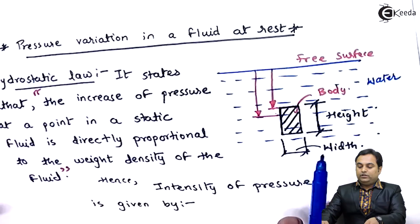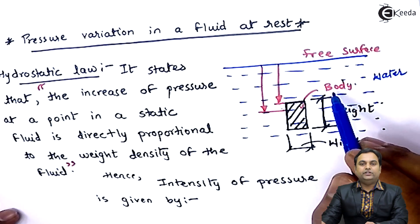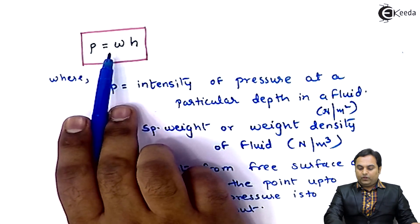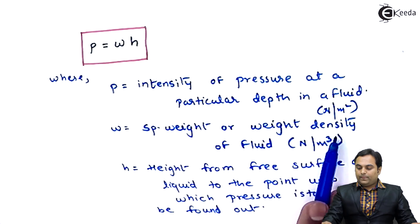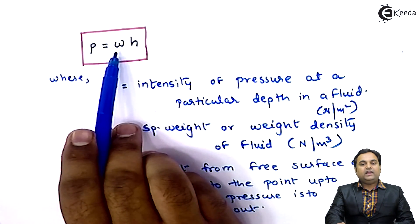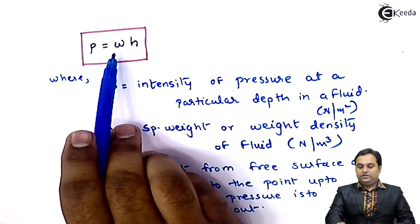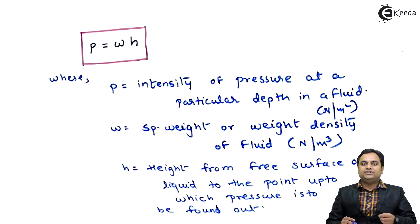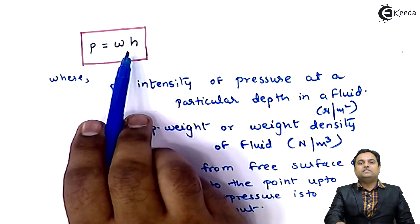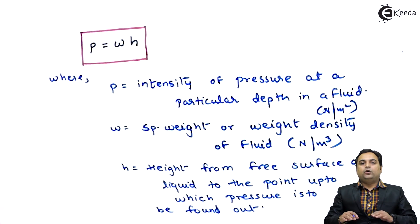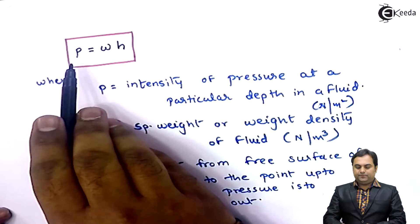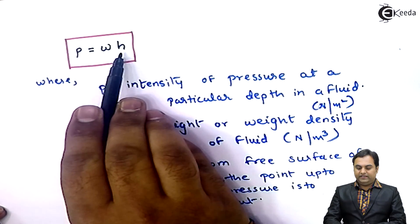So if we want to find out pressure at any given height for this body, that pressure can be found out using the formula W into H, where W is the specific weight or weight density of the fluid. As per hydrostatic law, pressure intensity is directly proportional to the weight density into H. H is the depth — H will go on changing, meaning pressure is also directly proportional to H.